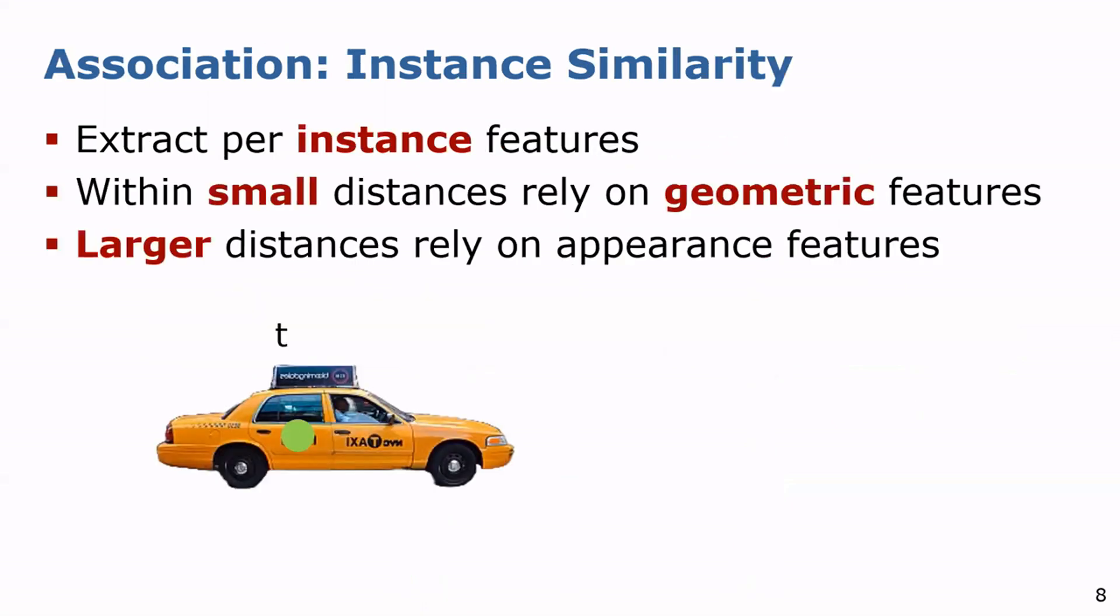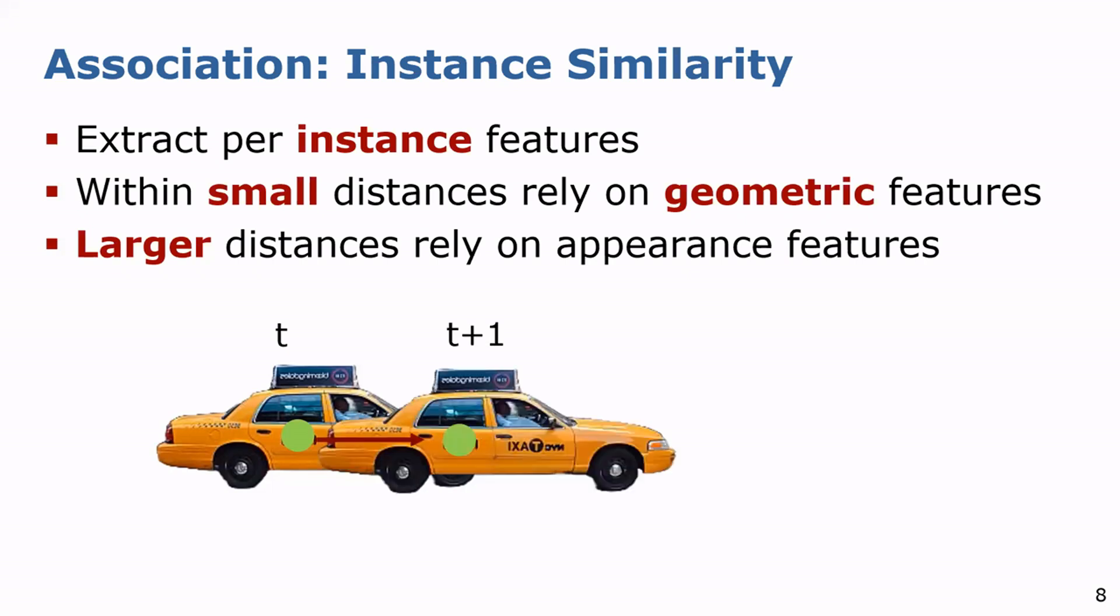For tracking, we directly integrate the offset prediction into the association and rely within small distances on the geometric features. However, to further enhance the association, especially within larger displacement of objects, we integrate appearance features.